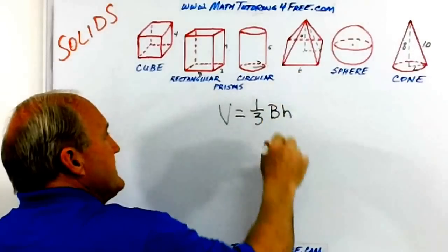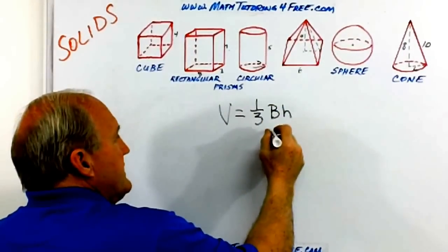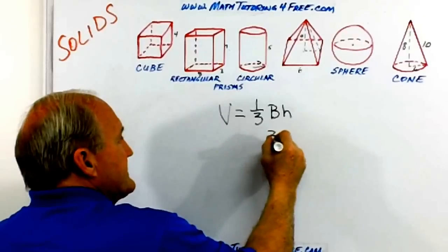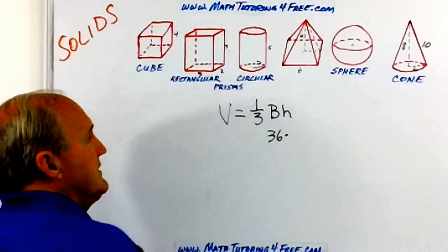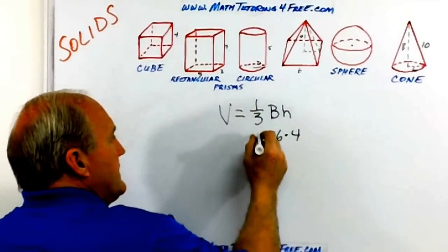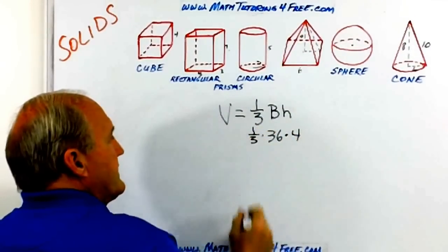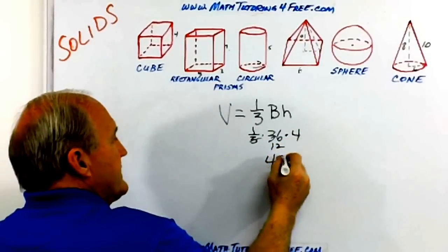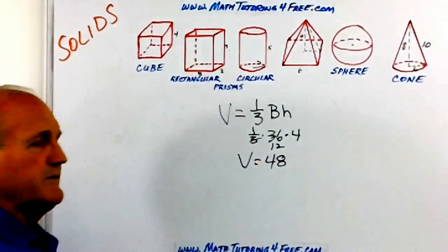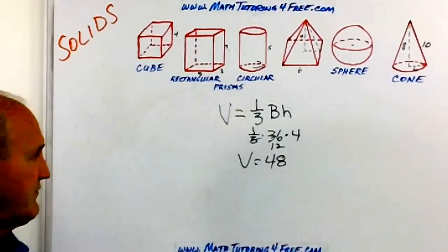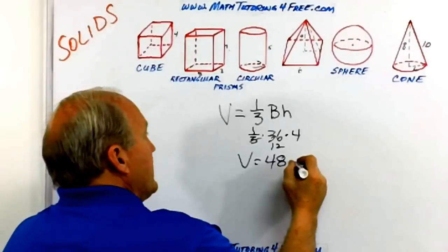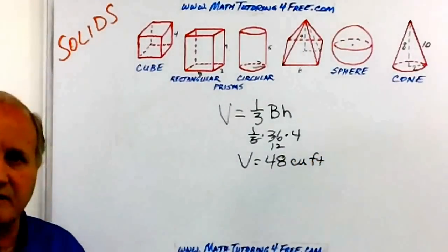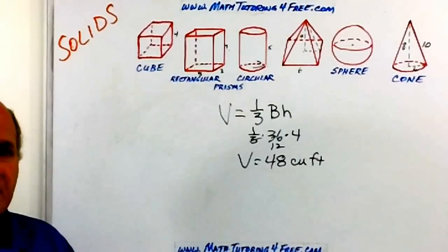In this case, the base happened to be a square, six by six. So capital B is 36, the height is four, and we're going to take one third of that. Three goes into 36, 12, 12 times four is 48. So the volume of this pyramid would be 48. And again, it's cubic feet, inches, yards, meters, centimeters, whatever it happens to be.